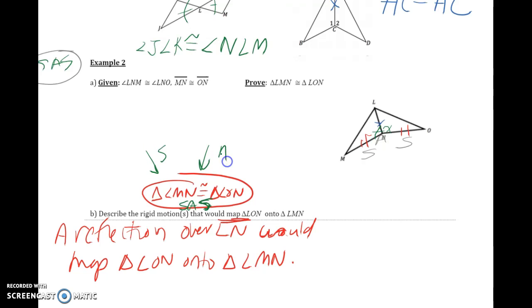So I'm going to need a side, an angle, and a side. And from my given information, I have a side: MN is congruent to ON, and that was given.